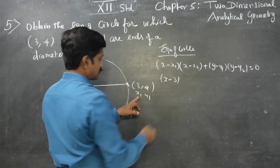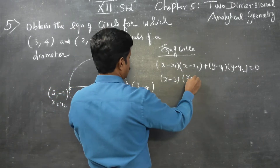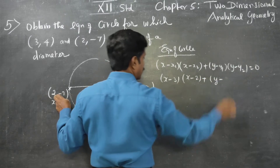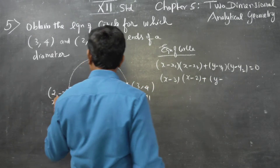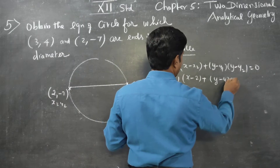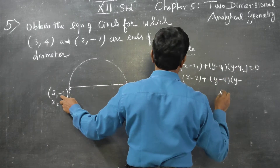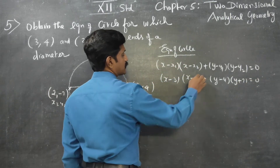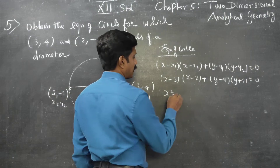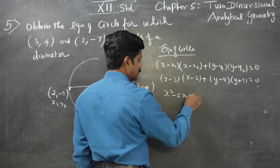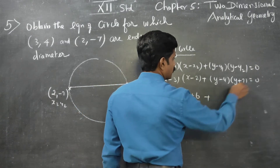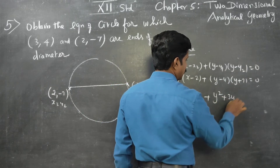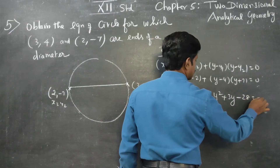Substituting the values: x1 = 3, x2 = 2, y1 = 4, y2 = −7, we get: (x − 3)(x − 2) + (y − 4)(y − (−7)) = 0. Simplifying: x² − 5x + 6 + y² + 3y − 28 = 0.